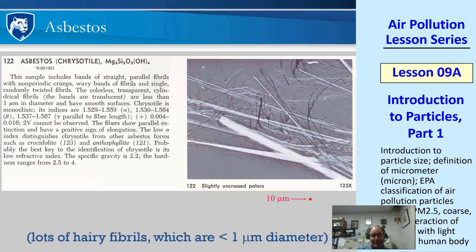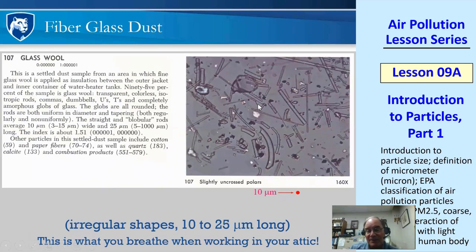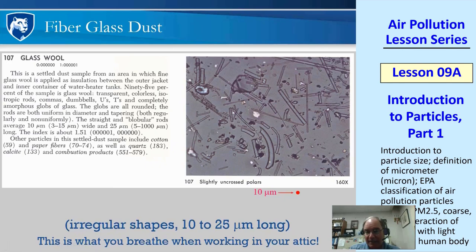Nowadays, whenever asbestos is removed from buildings — it was used for pipe insulation — workers are sent in with hazmat suits. Compare asbestos to fiberglass: fiberglass fibers are about 10 microns in diameter, long and straight but with no fibrils and a smooth surface. Fiberglass dust — what you breathe in an attic with fiberglass insulation — is generally 10 to 25 microns, so it mostly doesn't get into your lungs; it can irritate and make you cough, but you can basically cough it out.